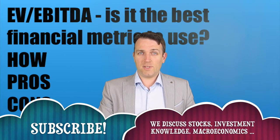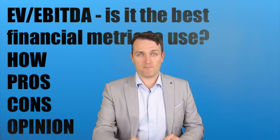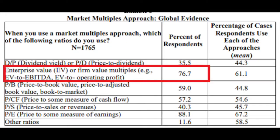Let me quickly start with the importance of EV/EBITDA and how commonly it is used. A recent research from Pinto from the CFA Institute, on 2000 respondents, found out that 92% of analysts mostly use a market multiple approach, from price-earnings ratio, from valuation ratio. From the market multiple approach, most of them use the price-earnings ratio, but the second most used metric is enterprise value to EBITDA — 92% use EV to EBITDA.